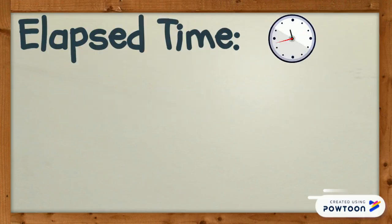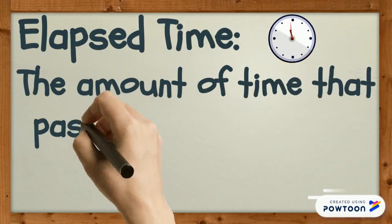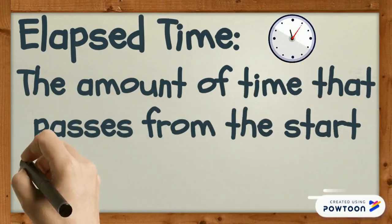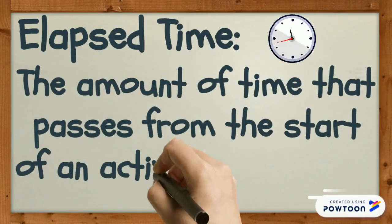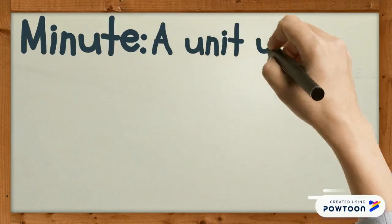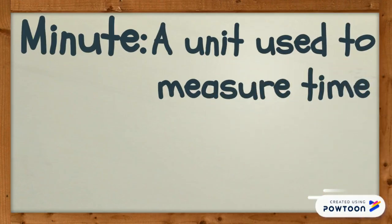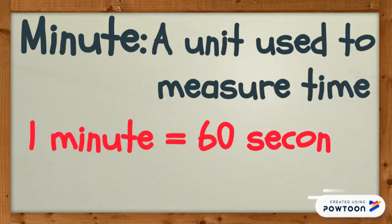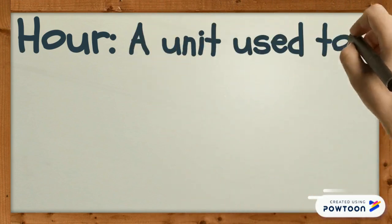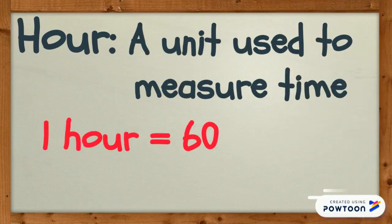Elapsed time is the amount of time that passes from the start of an activity to the end. A minute is a unit used to measure time. One minute equals 60 seconds. An hour is another unit used to measure time. One hour equals 60 minutes.